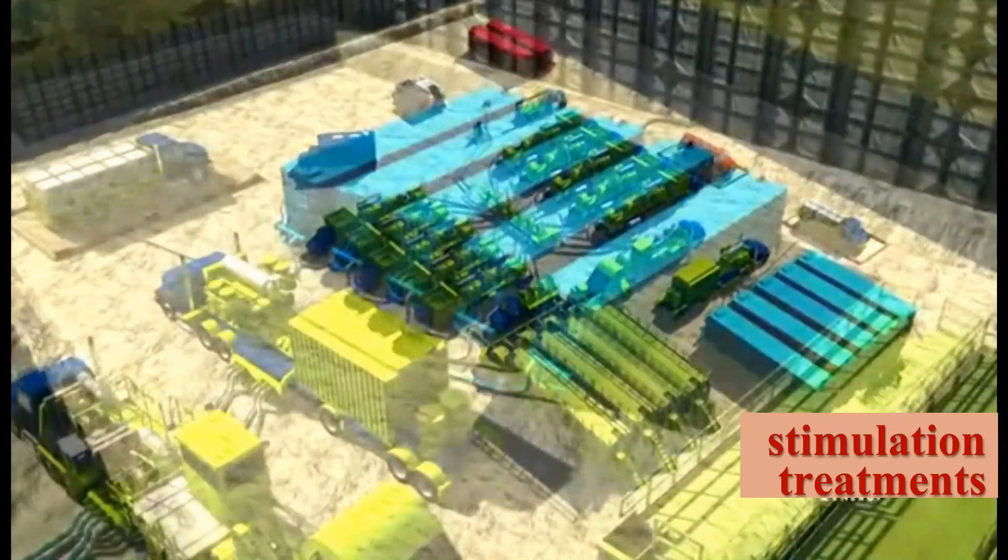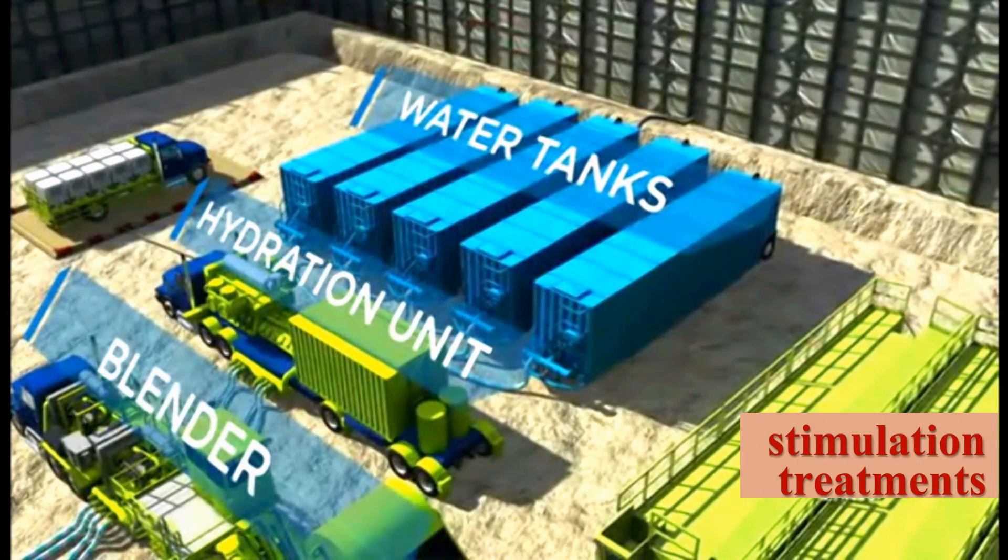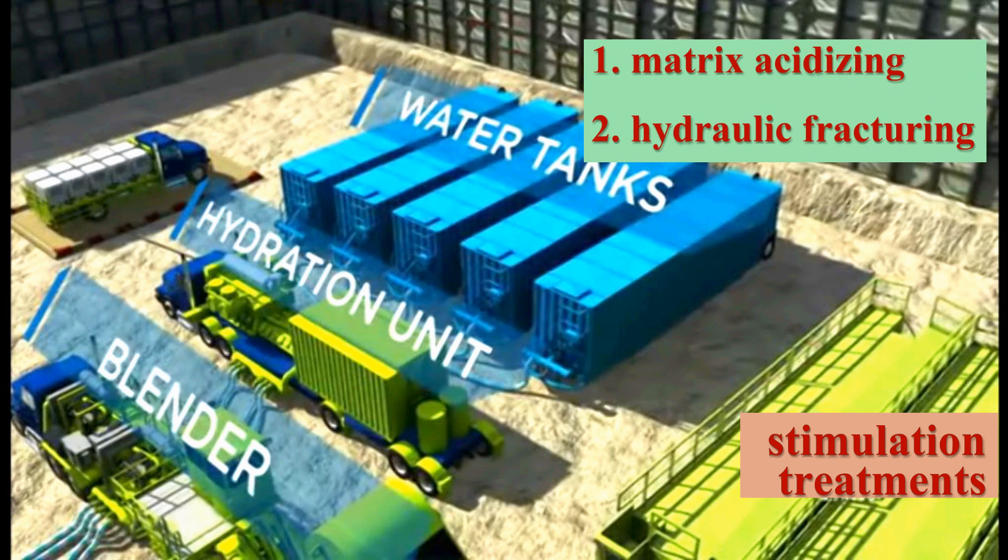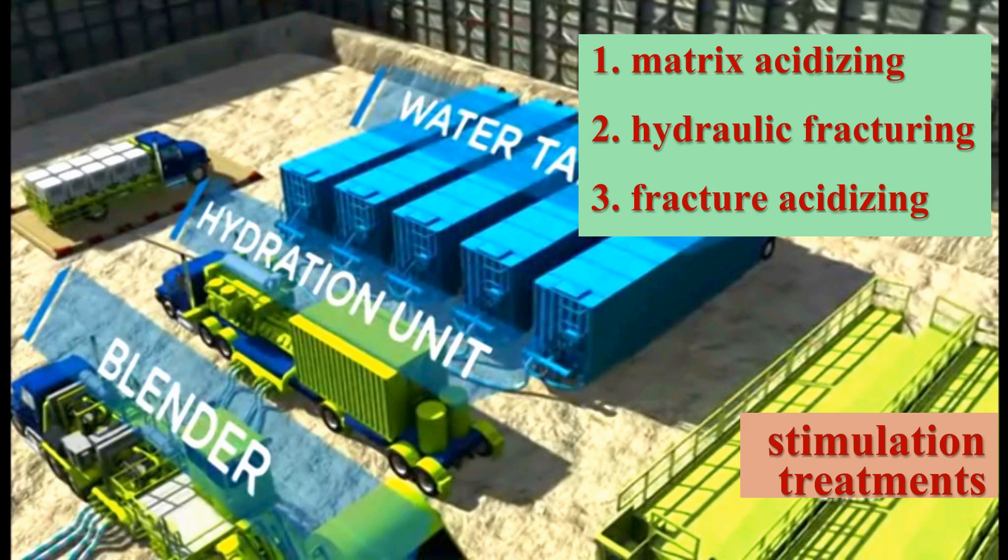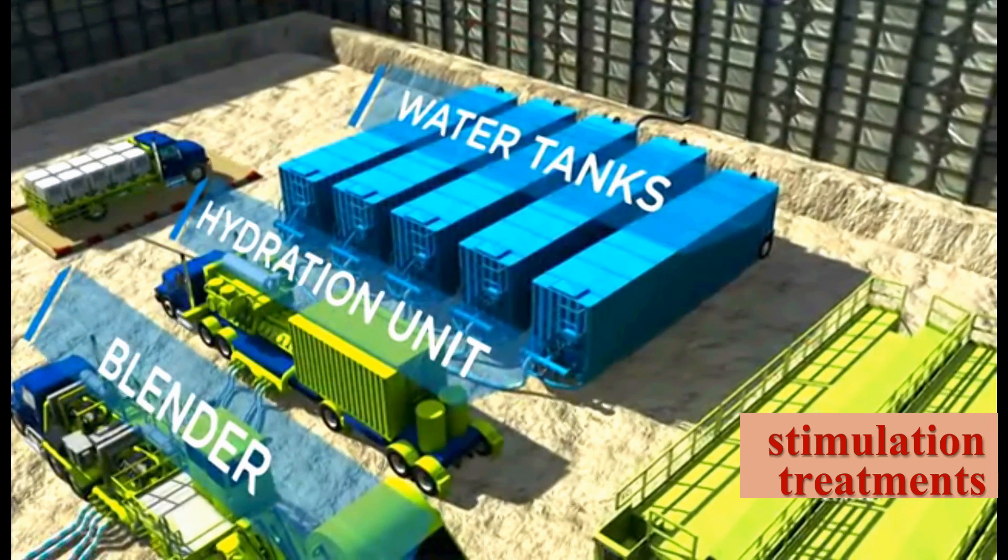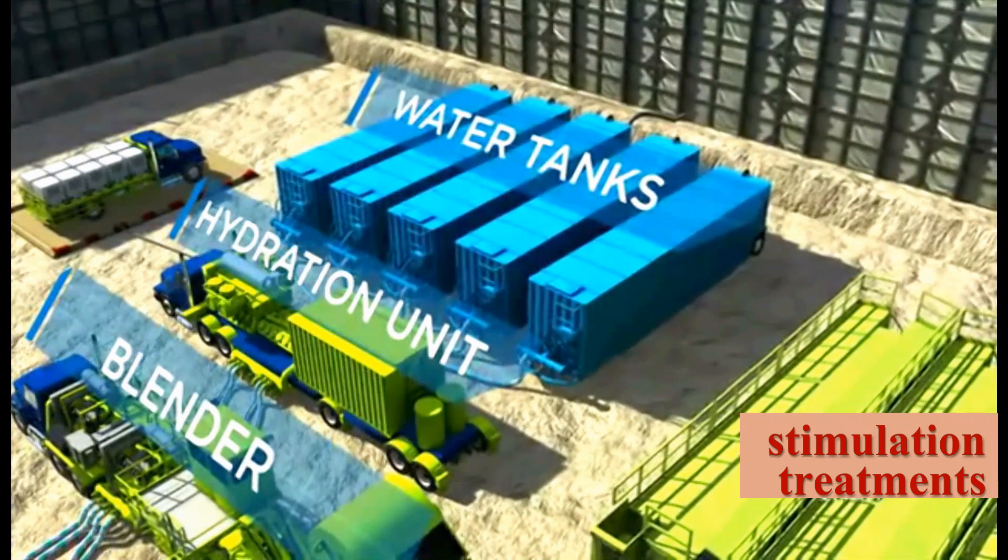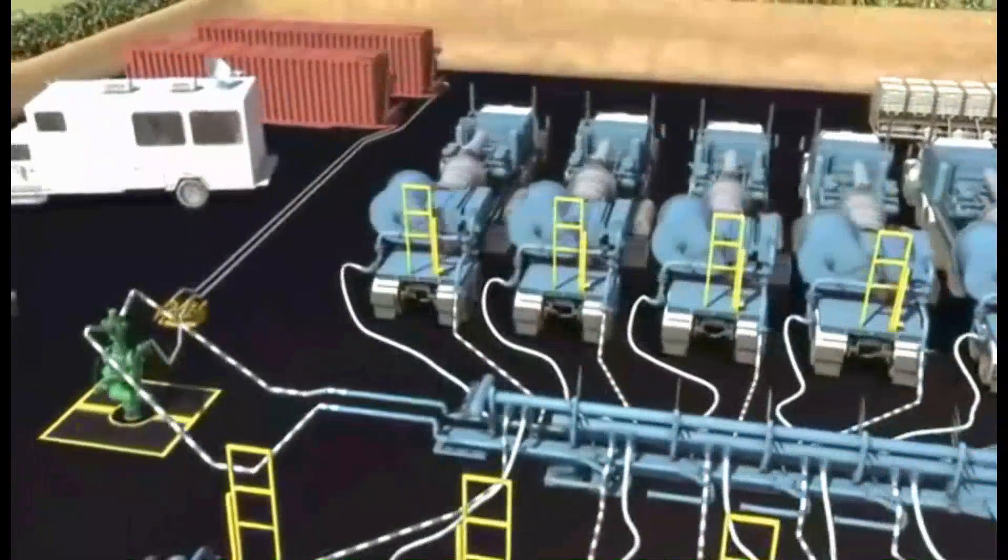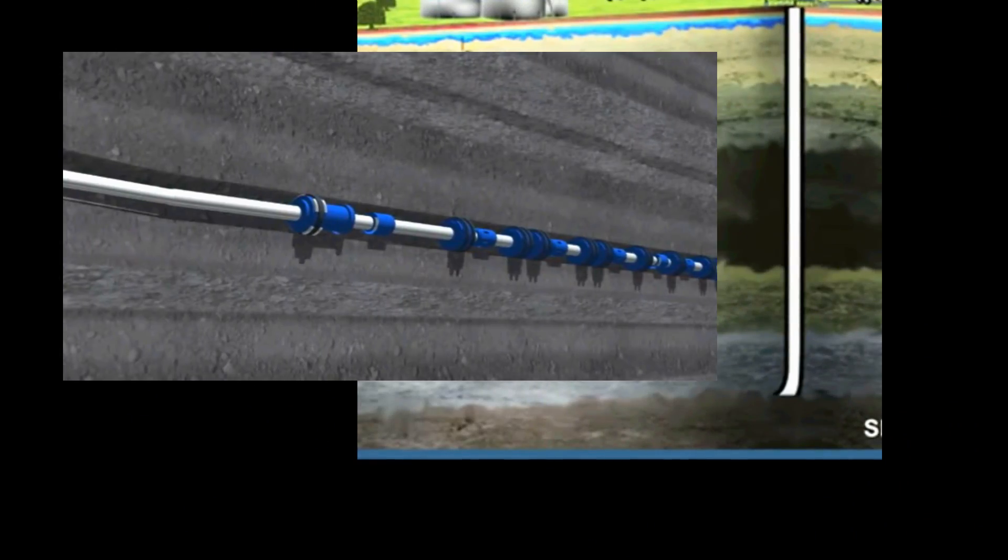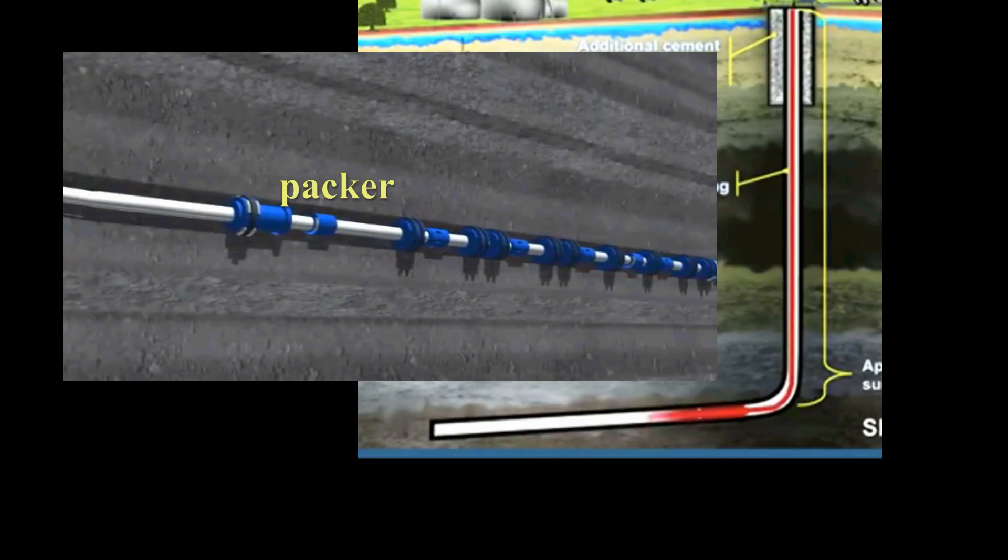Let's look at some stimulation treating operations. They are matrix acidizing, hydraulic fracturing and fracturing acidizing. In all stimulation operations, treating liquids are pumped out of the surface tank, down the well, inside the tubing anchored by a packer, out through the perforations and into the formation.